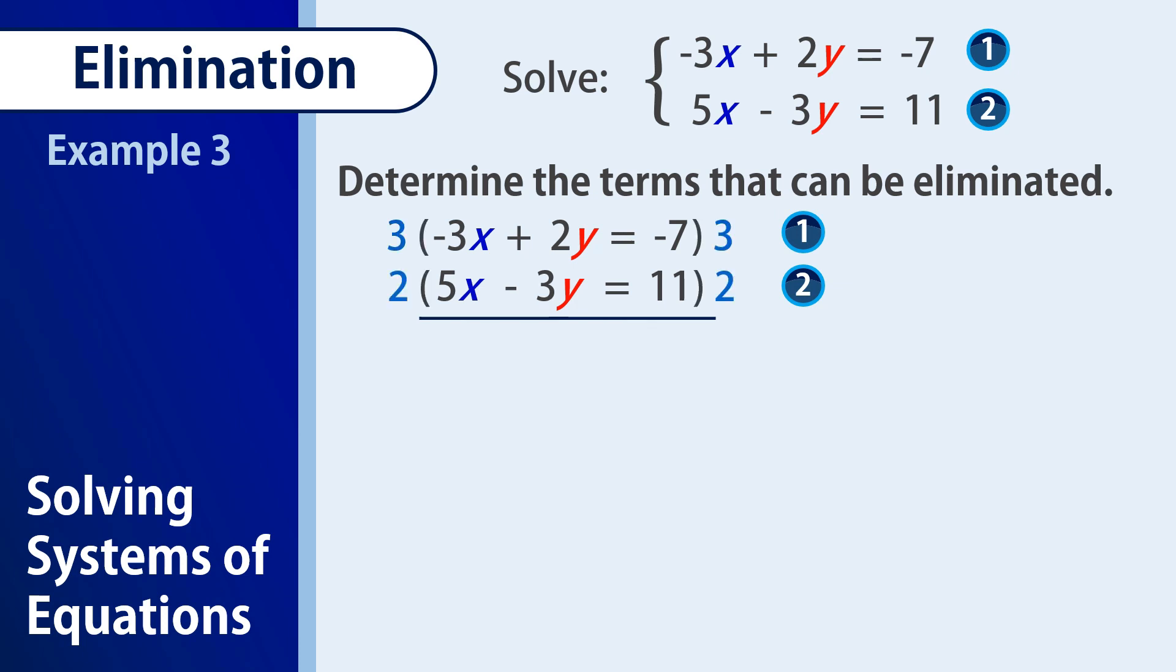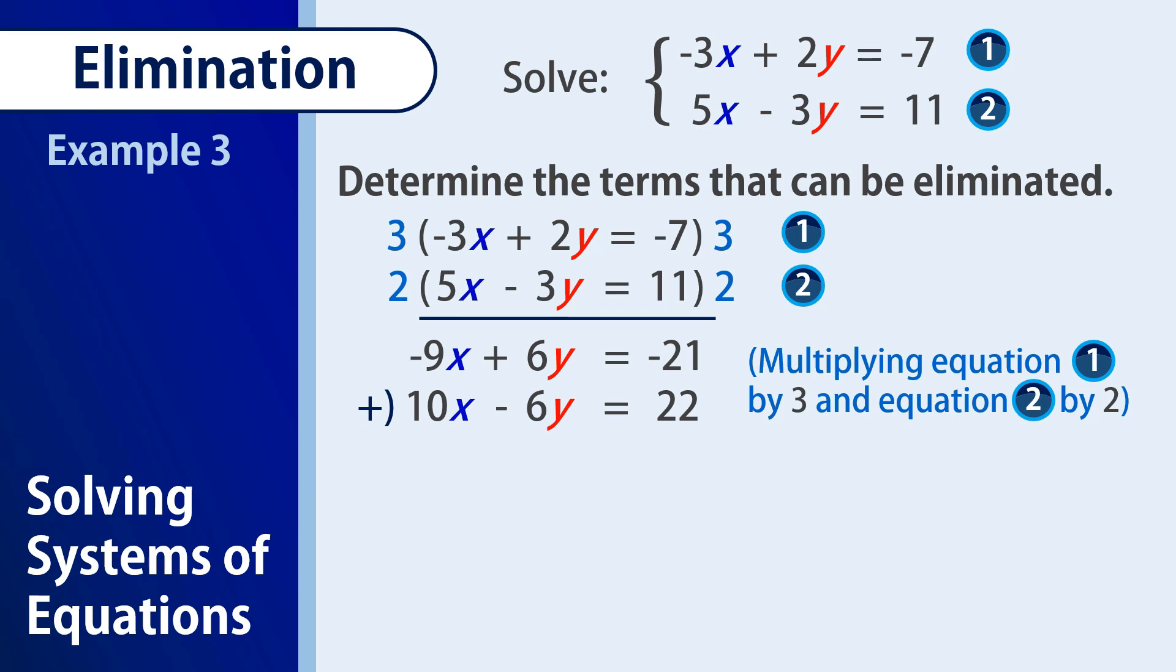Notice that the 2 is the coefficient of your y in the first equation. The 3 is the coefficient of y in the second equation. So that our new equations would be negative 9x plus 6y equals negative 21 and 10x minus 6y equals 22. So by addition, we have negative 9x plus 10x, 1x or simply x, and that gives us also 1.